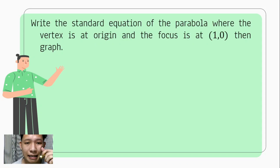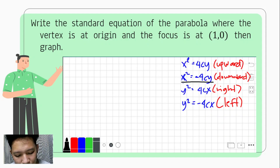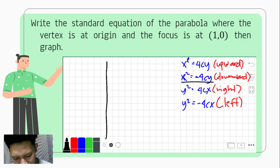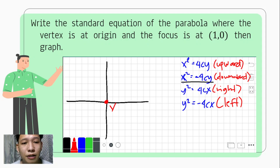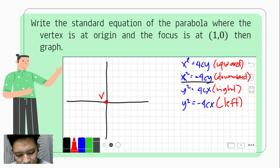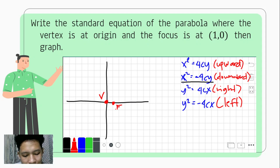Let us now proceed with our next example. We are going to write the standard equation of the parabola where the vertex is at the origin and the focus is at (1, 0), and then we have to graph. First, we locate the points: the vertex is at the origin and the focus is at (1, 0). Since the focus is to the right of the vertex, we have the idea that our parabola opens to the right.